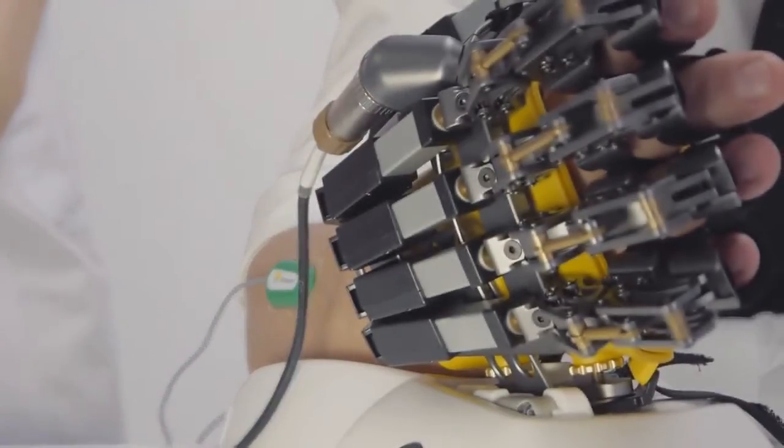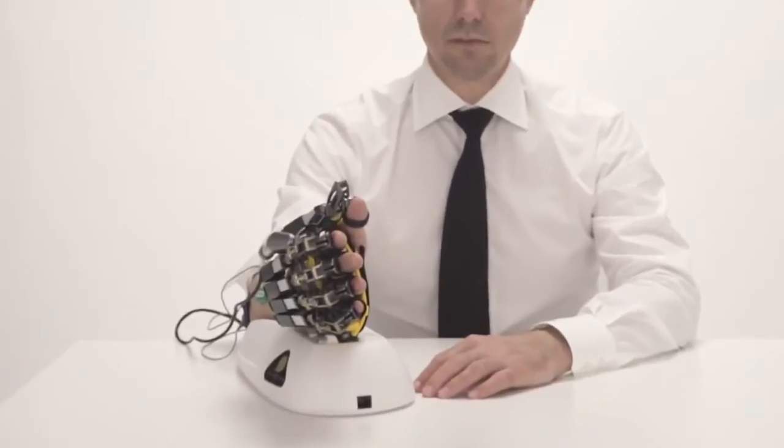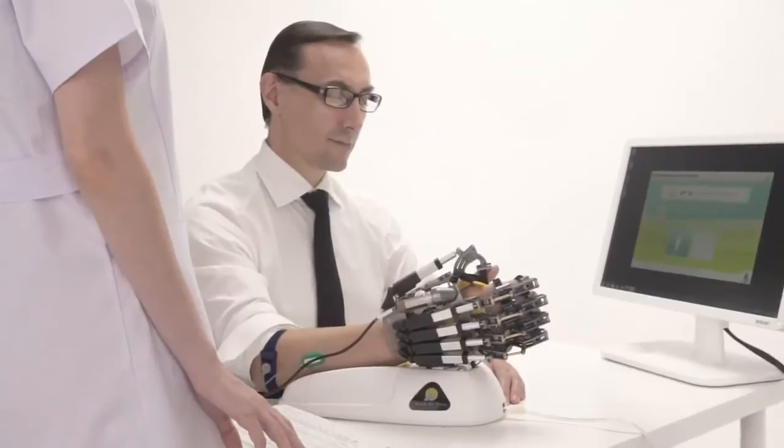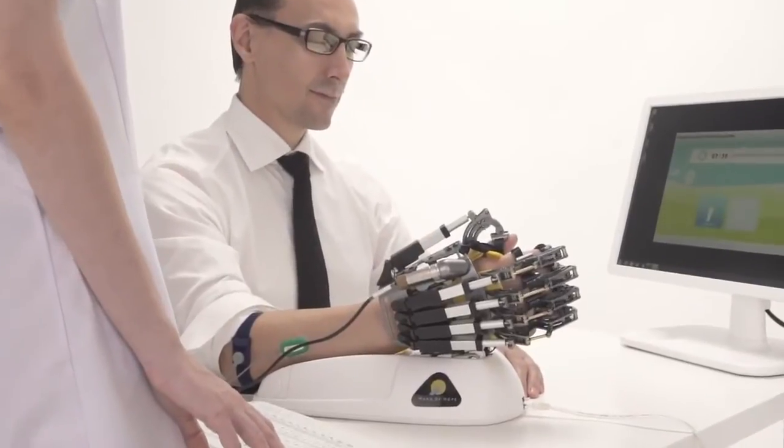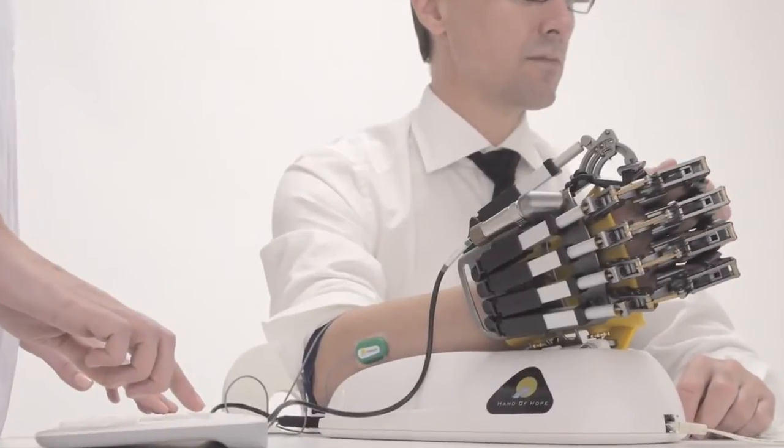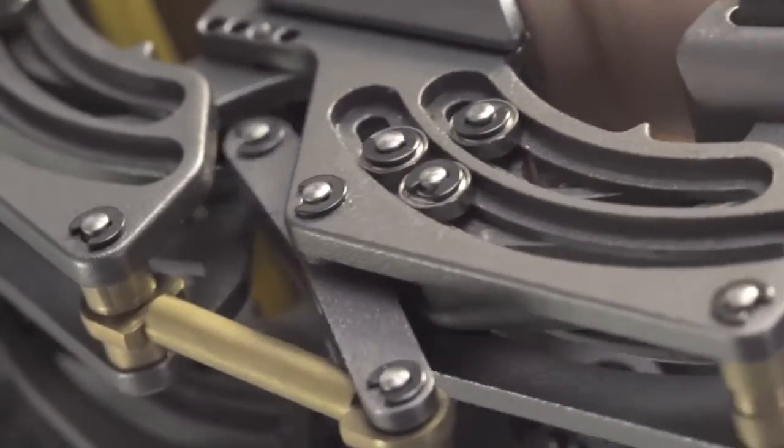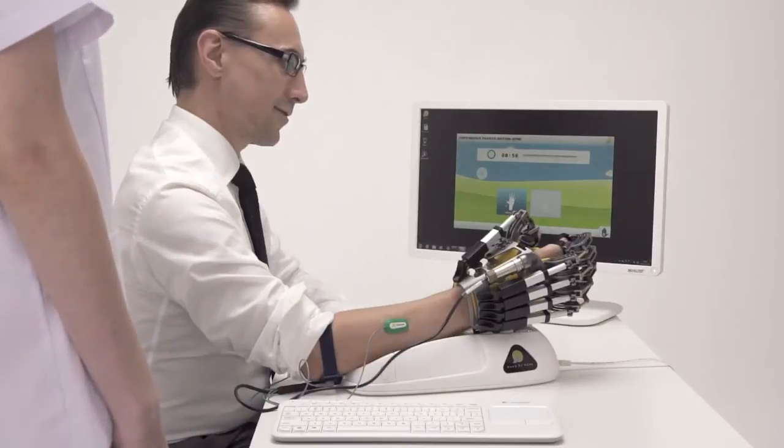Hand of Hope detects the patient's intentions to move the impaired hand. Voluntary EMG signals are commanded by the brain and detected by sensors. As an active and assistive device, it processes these signals and delivers them to the hand brace. In that way, the robotic arm understands that the patient wants to open or grasp the hand.